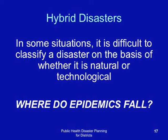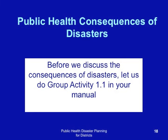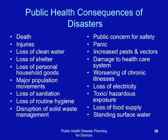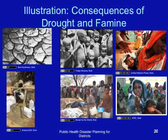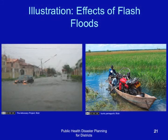We shall now look at the public health consequences of disasters. There are several consequences, and they include death, injuries, loss of clean water, loss of shelter, loss of personal household goods, major population movements, loss of sanitation, loss of routine hygiene, disruption of solid waste management, public concern for safety that may include panic, increased pests and vectors, damage to healthcare systems, worsening of chronic illnesses like diabetes and hypertension, loss of electricity, toxic and hazardous exposures, loss of food supplies, and standing surface water. The session also includes pictorial presentations illustrating the consequences of drought, famine, flash floods, slow onset floods, and landslides.